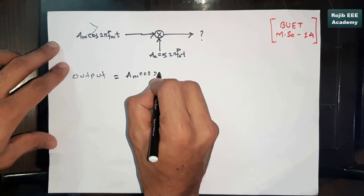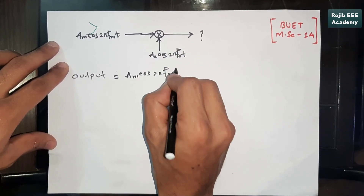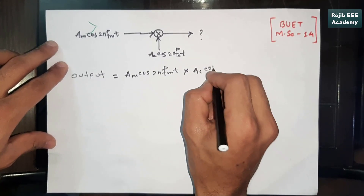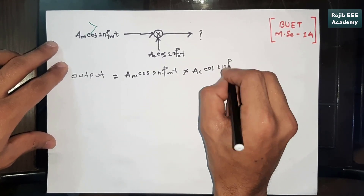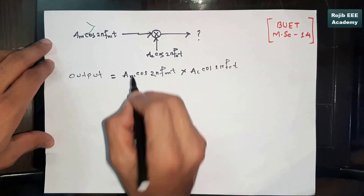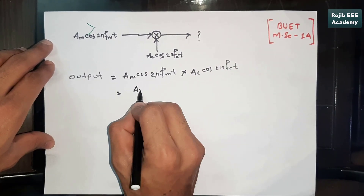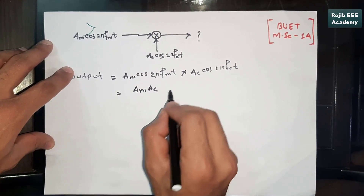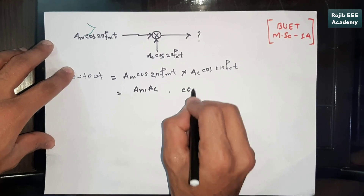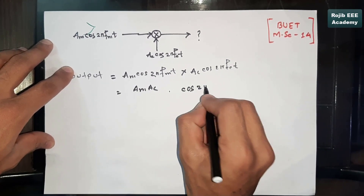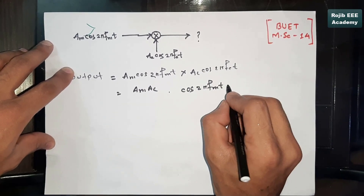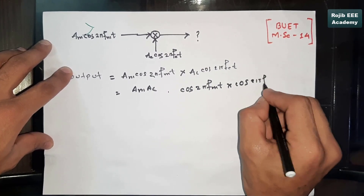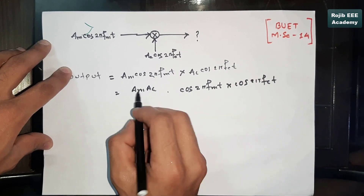The output is: Am·cos(2π·fm·t) multiplied by Ac·cos(2π·fc·t). This is the structure of the calculation — Am·cos(2π·fm·t) times cos(2π·fc·t).